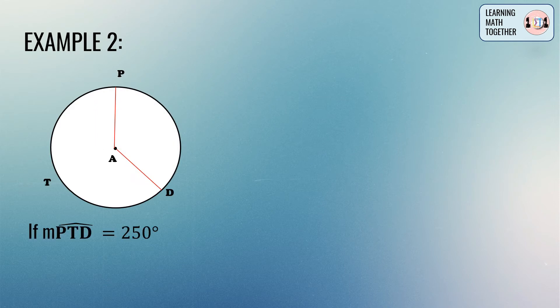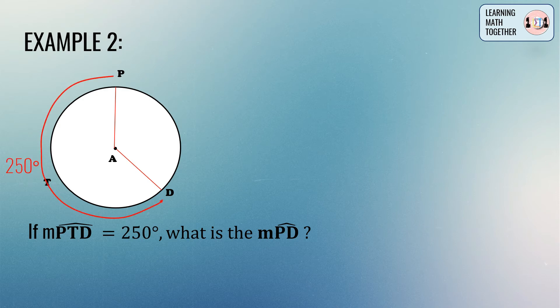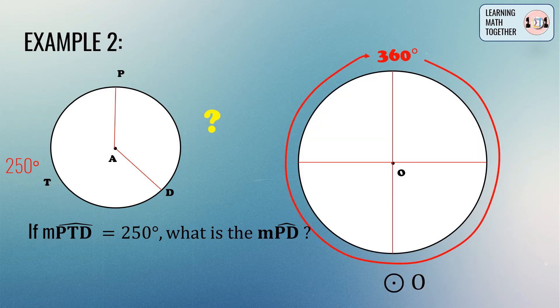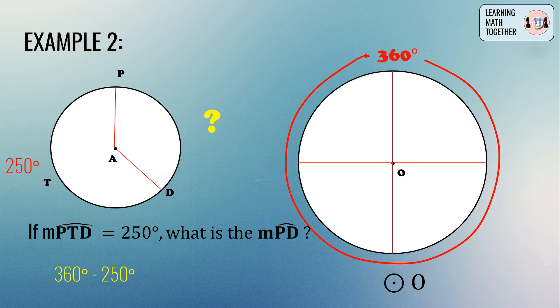In example number two, we will focus on computing the measurement of an arc. We have circle A with the given: if the measurement of arc PTD is equal to 250 degrees, what is the measurement of arc PD? Since the degree measure of a full circle is 360 degrees, we subtract 250 from 360, which gives us 110 degrees.